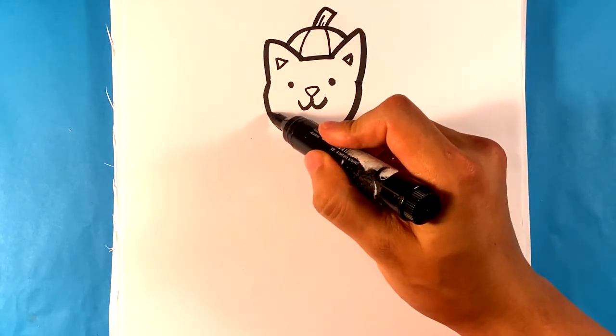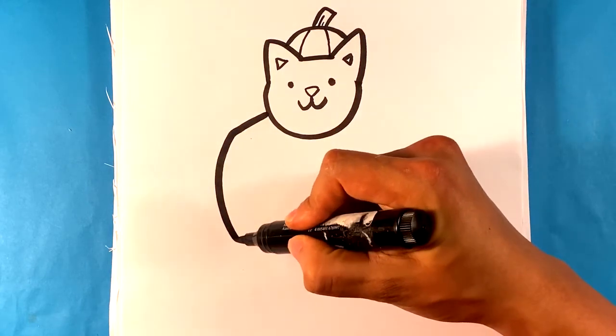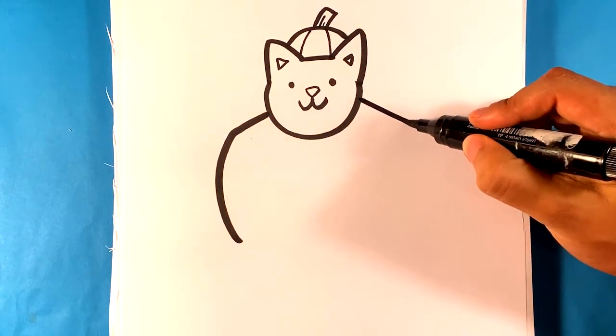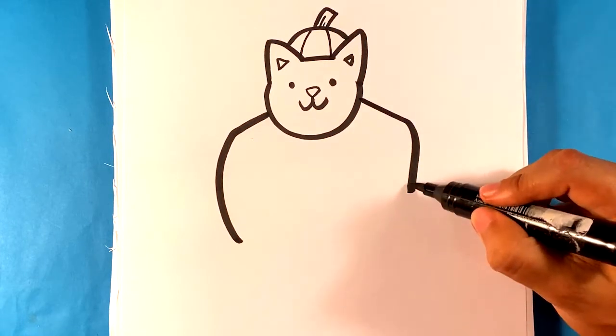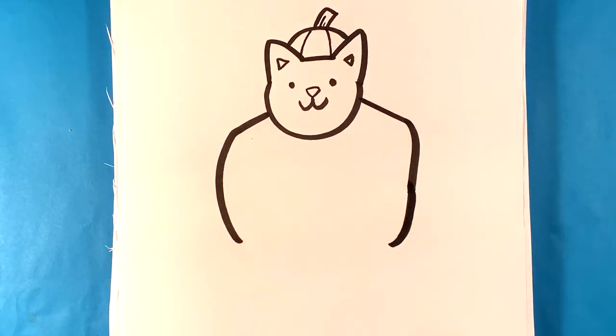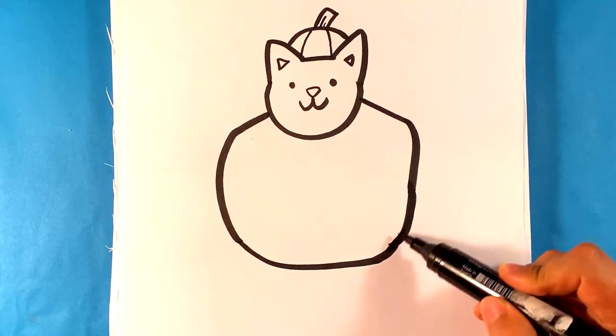All right. Now I'm going to draw the pumpkin outfit. So pull out here, around here, around here, out here. Oh snap. Yeah, pull that line down here. And then I'm going to pull that all the way. So it's kind of like a marshmallow shape.